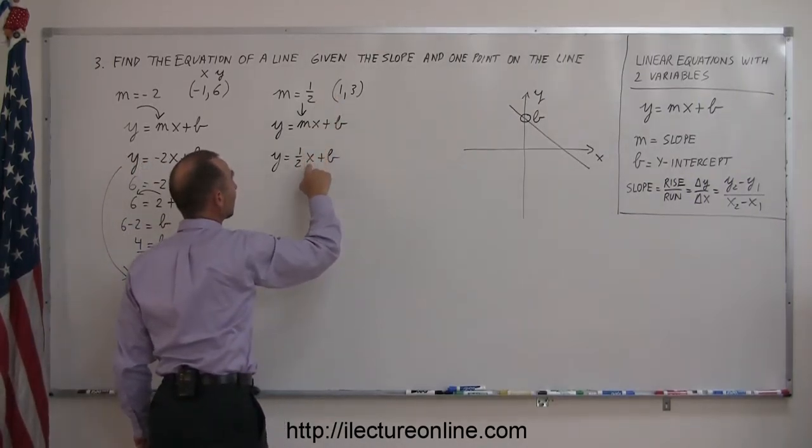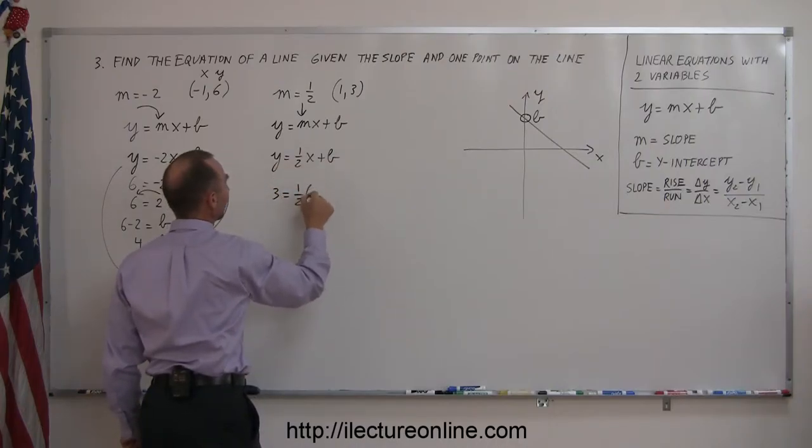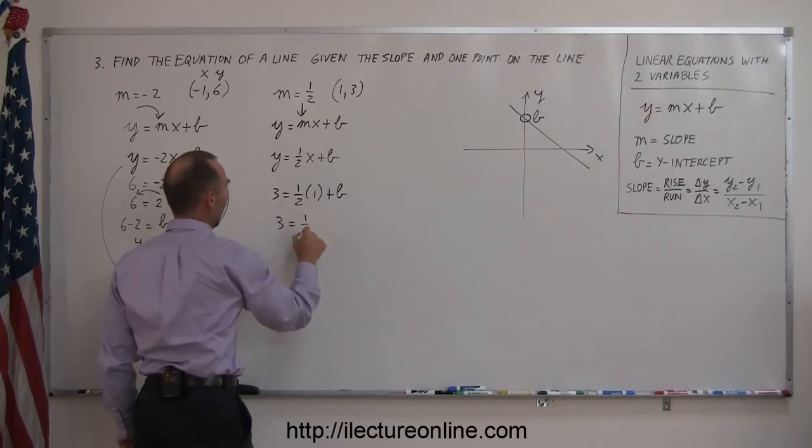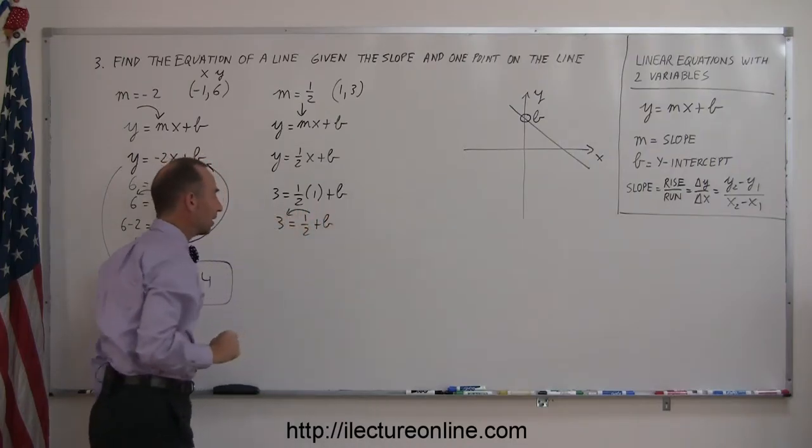Take the x-value, plug it in here, take the y-value, plug it in there, so we have 3 equals 1 half times 1 plus b, or 3 equals 1 half plus b, move the 1 half to the other side.